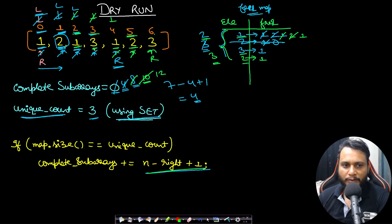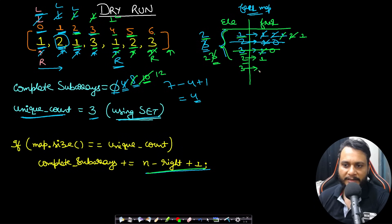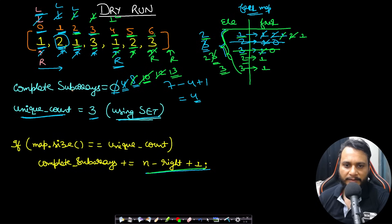Moving left again loses element 3 (frequency hits 0, removed), map size drops to 2 — invalid. We move right, add element 3 (frequency 1), map size returns to 3. So 4 to 6 is valid — add 1, count becomes 13. Move left again; entry for 1 is removed, size drops to 2. We try to move right but have hit the end, so we break. The final answer is 13.